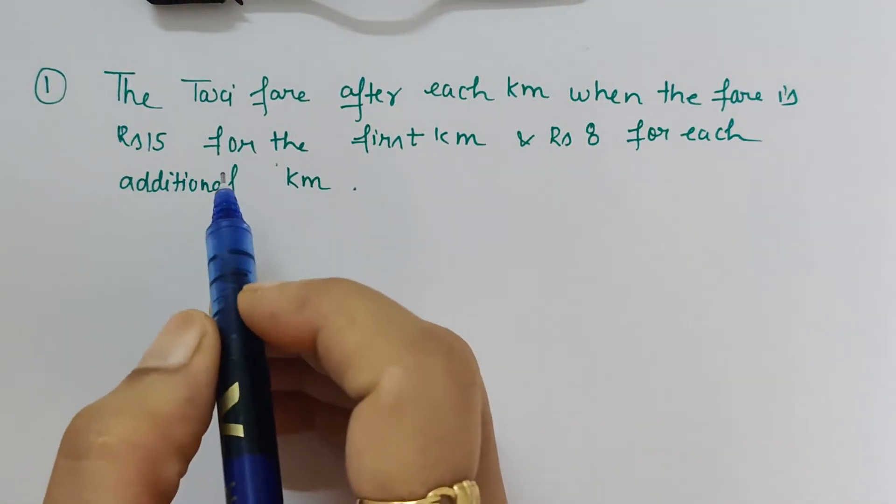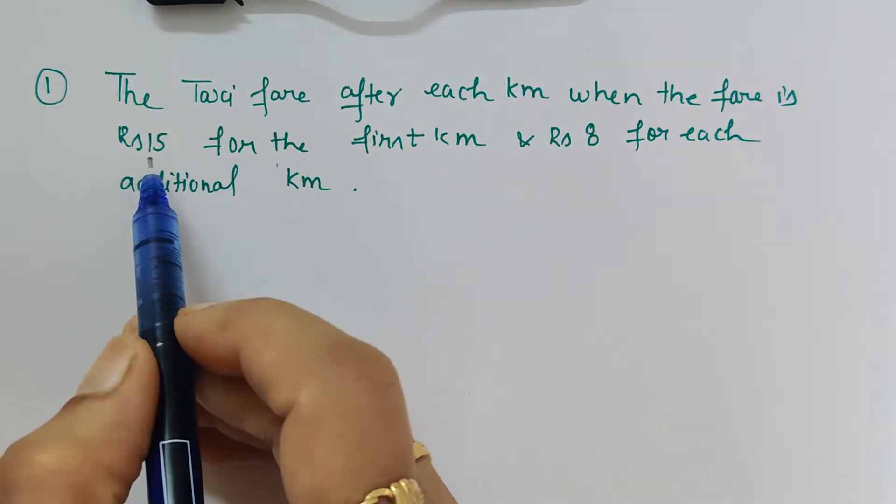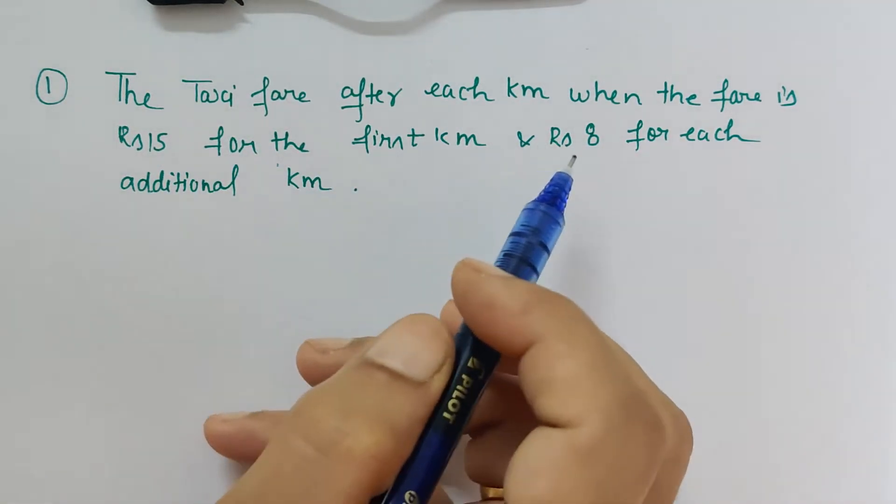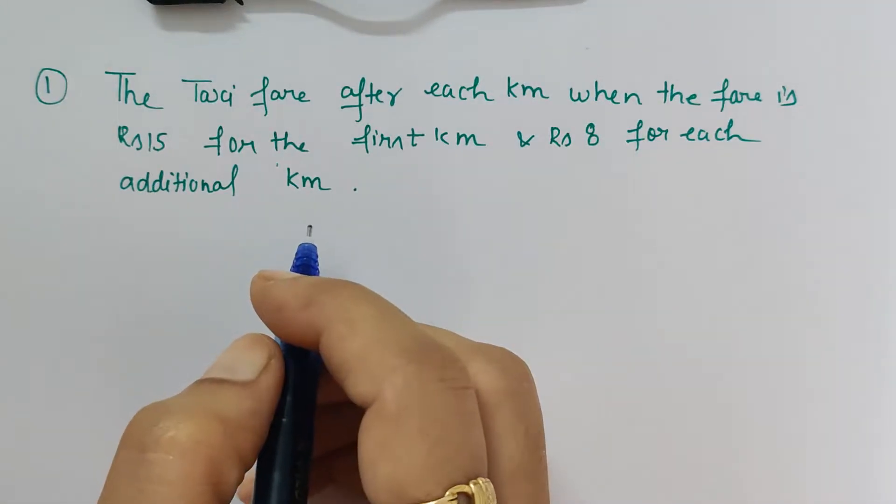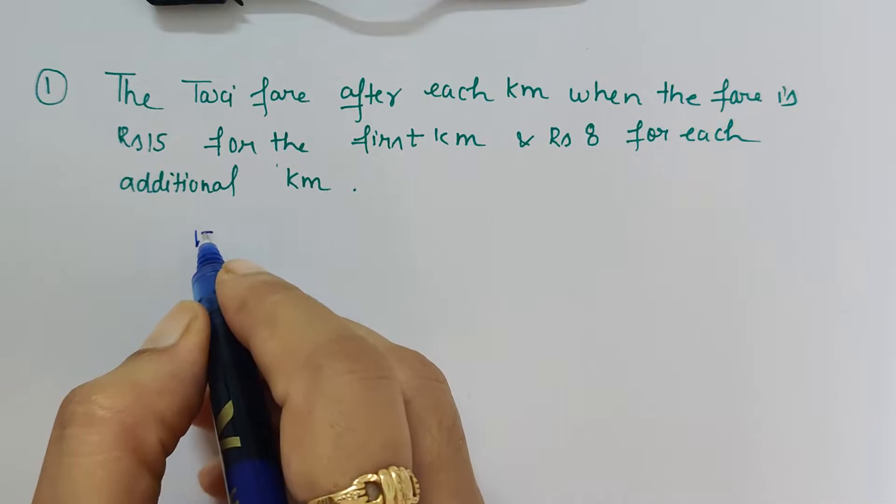Hello friends, in this video we can see the taxi fare after each kilometer when the fare is rupees 15 for the first kilometer and rupees 8 for each additional kilometer. So here, first kilometer fare is rupees 15.